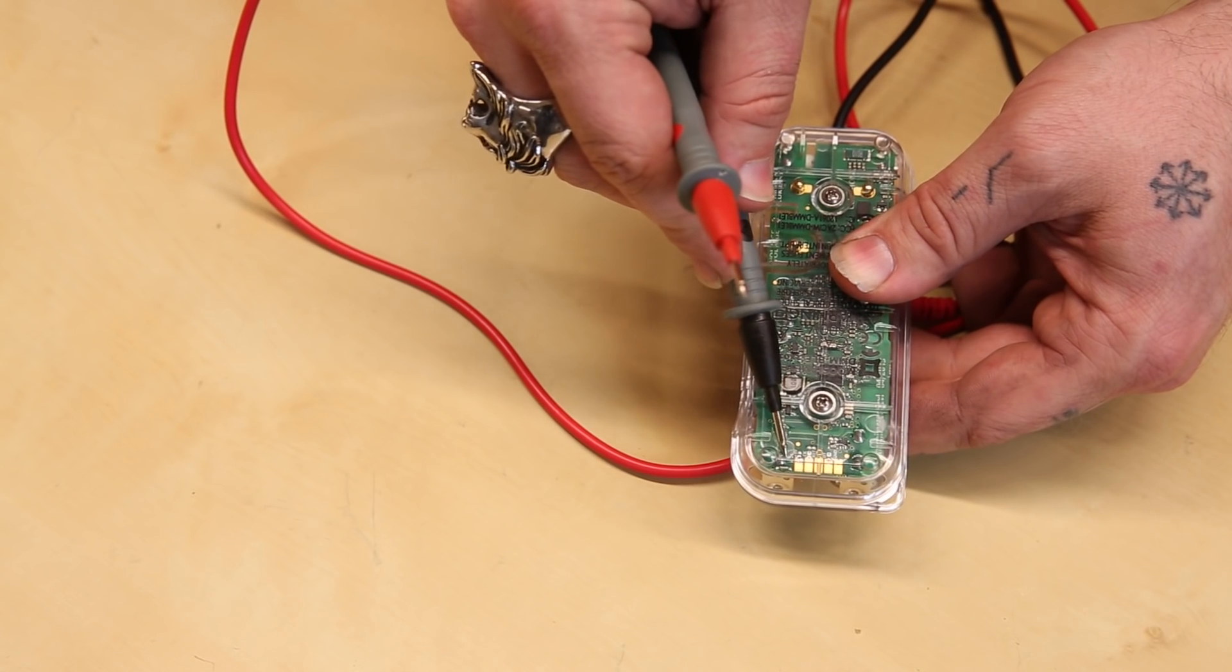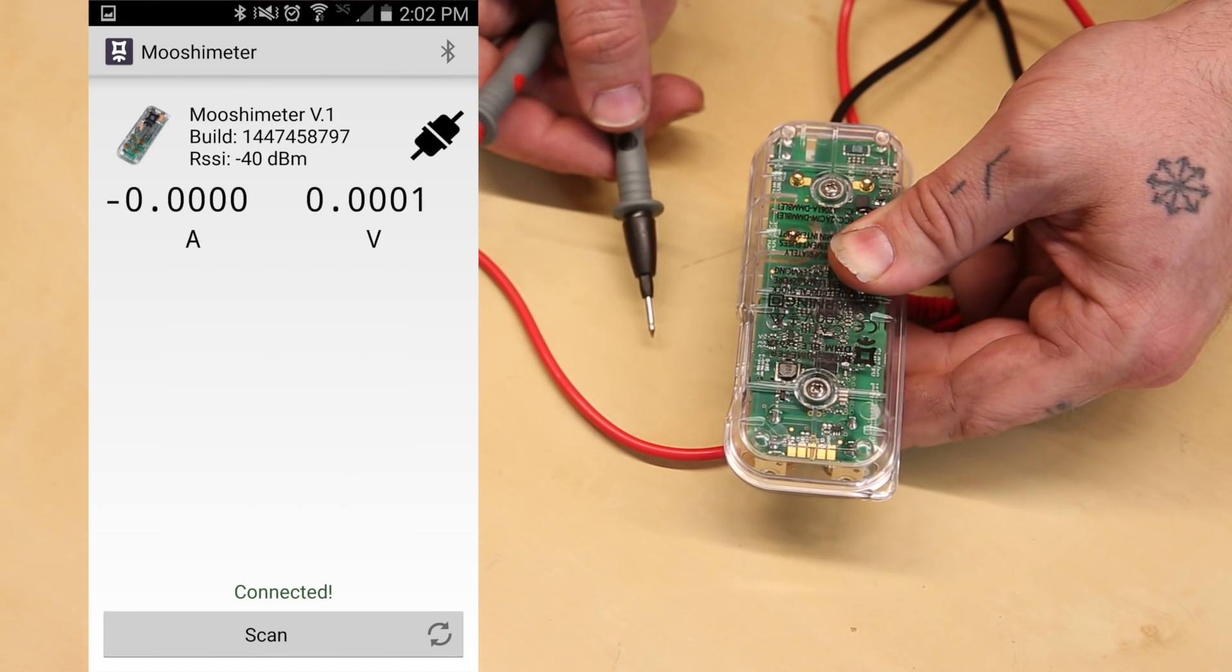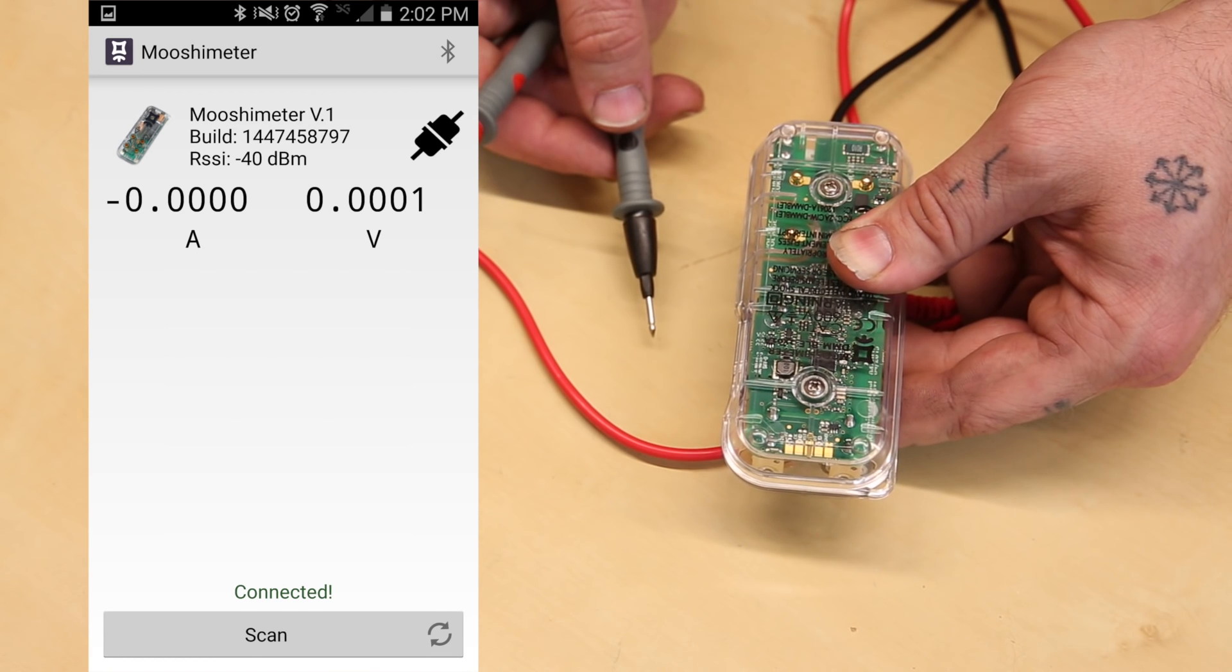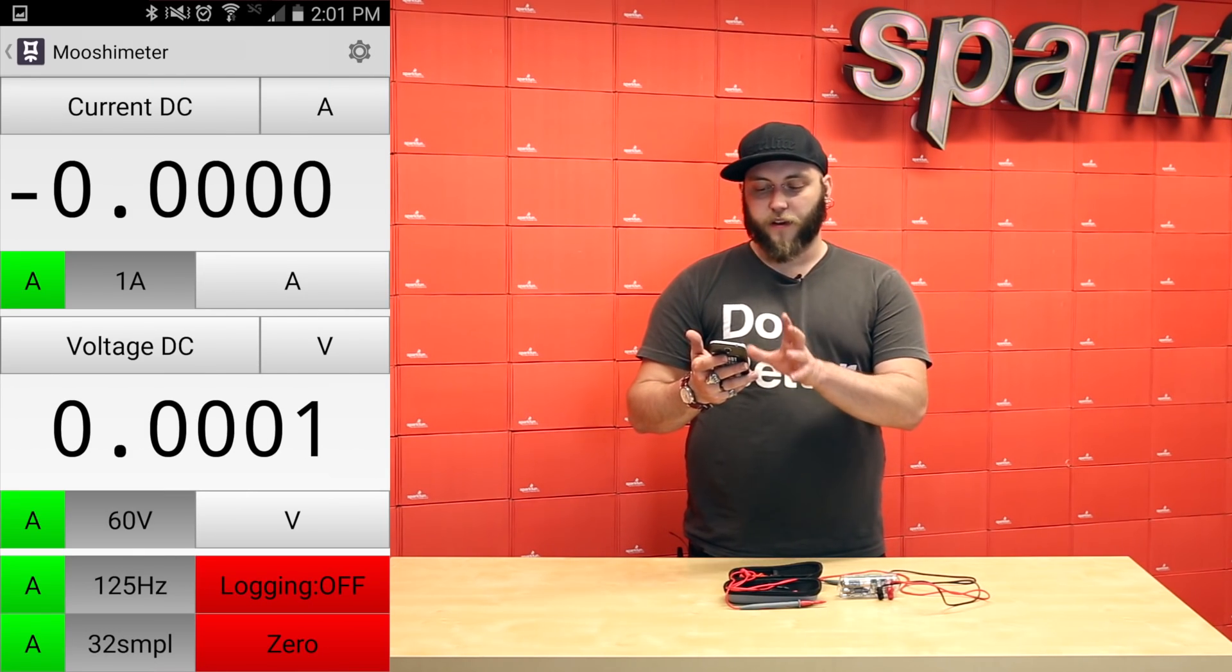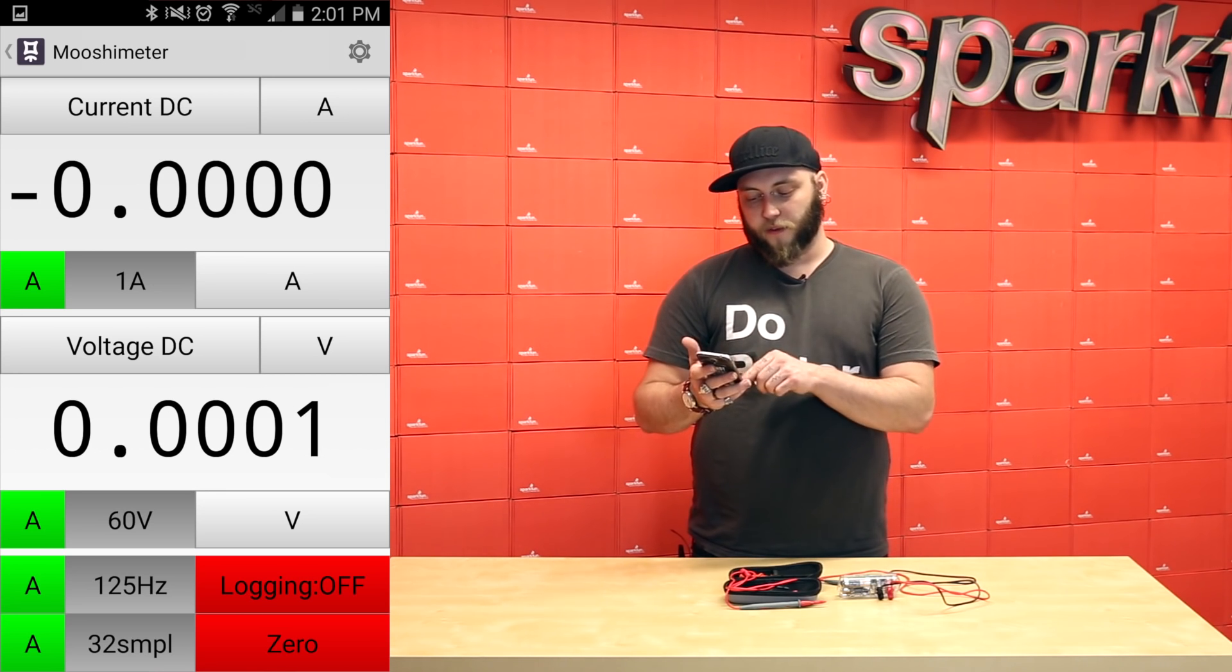Now that the Mushi Meter is in pairing mode, open the Mushi Meter app, and you should see a little screen where it says scanning for devices, and you'll see Mushi Meter V1. And once your Mushi Meter is connected, you'll see a readout of the current in DC, the voltage in DC, as well as a few other bits and bobs.